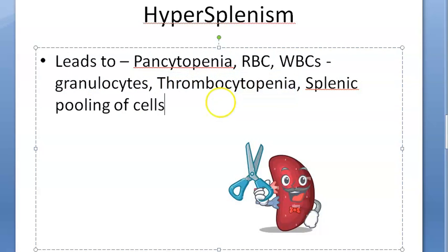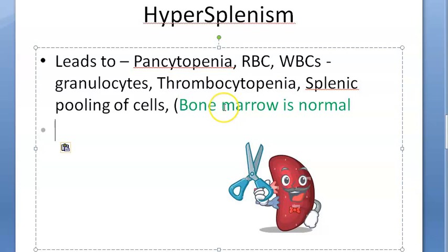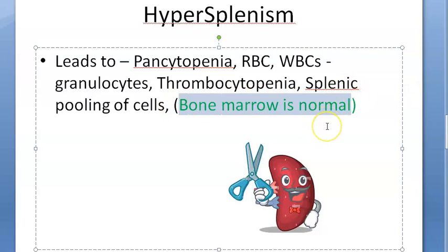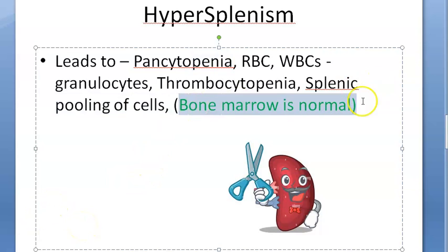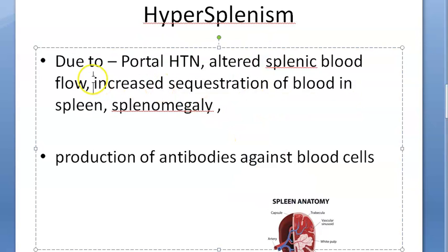With fewer platelets, these patients can have bleeding tendencies. There will be splenic pooling of cells — all the cells will be trapped in the spleen because the spleen is the one killing them. Importantly, the bone marrow is fine and is still producing all these cells normally. The pancytopenia is caused by the spleen, not the bone marrow — so production is fine but destruction is increased.